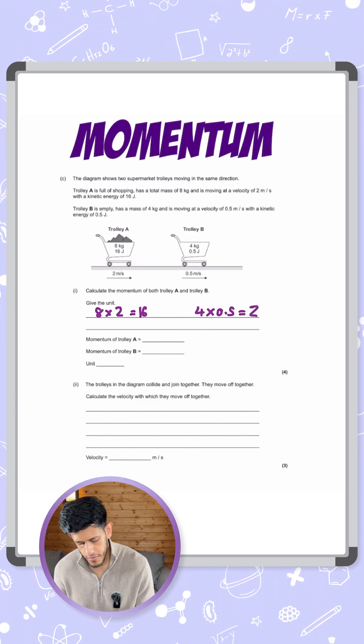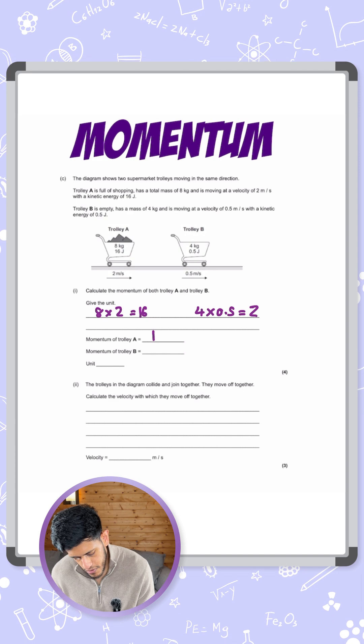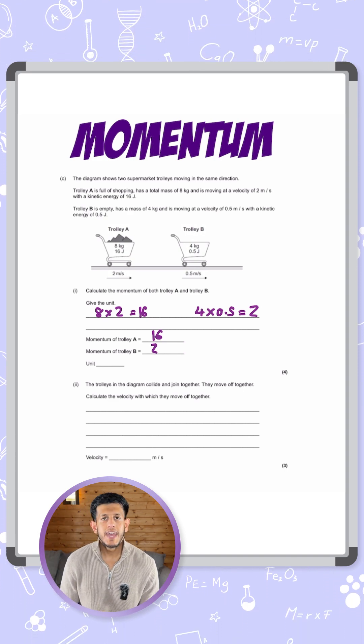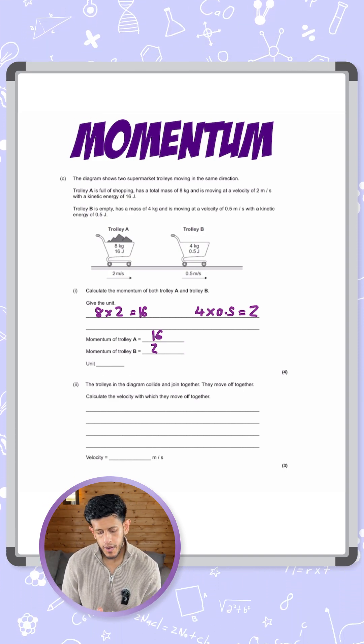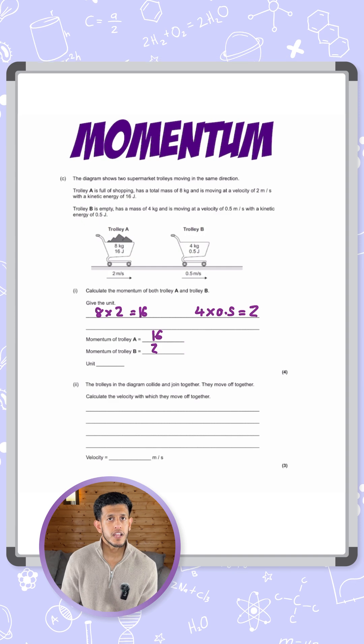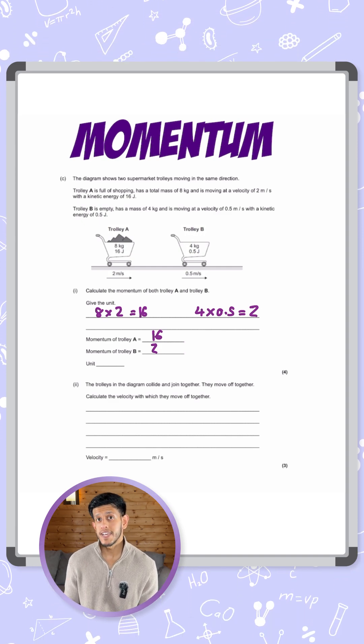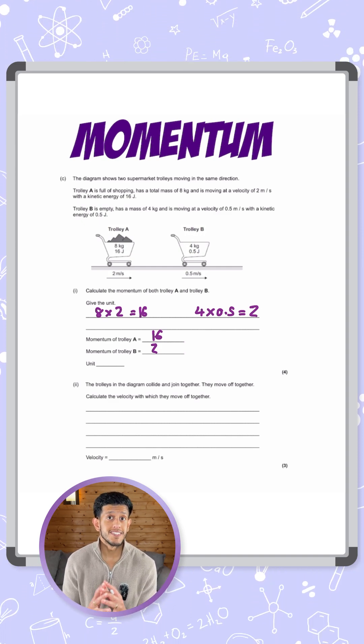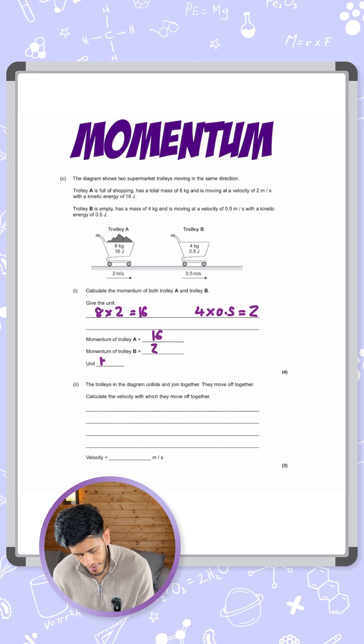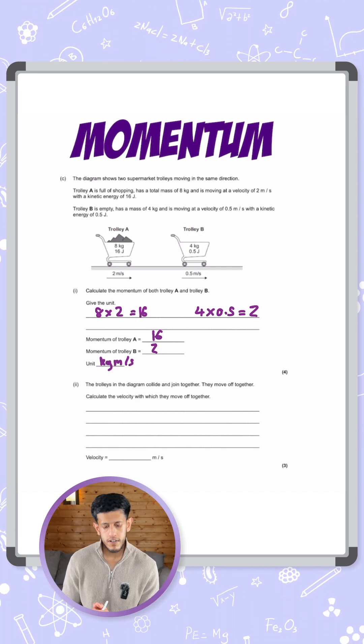Now we can put those in their respective boxes - 16 for trolley A, 2 for trolley B. For the unit, we've done mass times velocity, mass in kilograms, velocity in meters per second. The product of those is just combining the units, so that is kilogram meters per second. There we are, four marks.